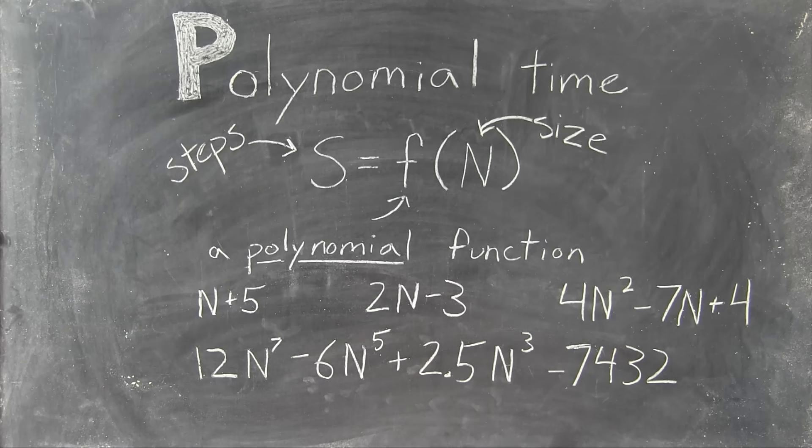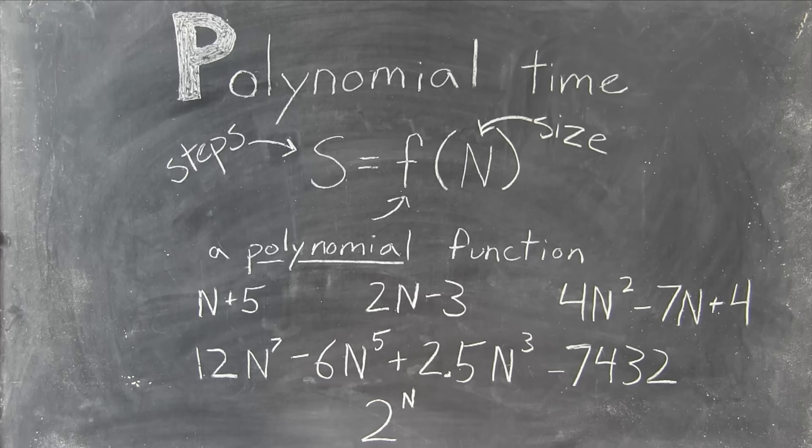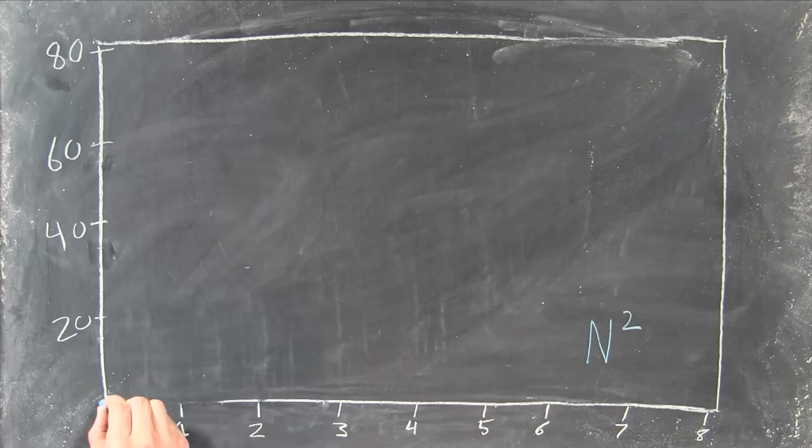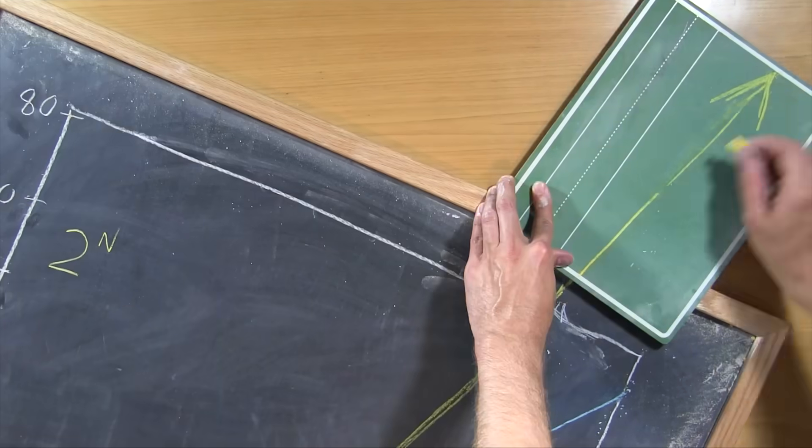But importantly, they're not exponential functions, like 2 to the power of n, which gets to be a ton of steps really fast as n goes up, a lot quicker than n to the power of 2.